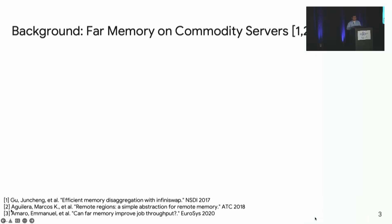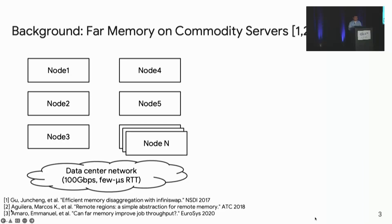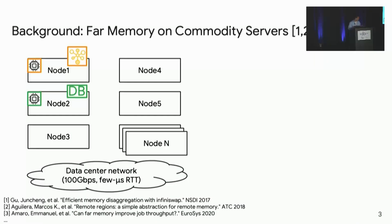From a high level, far memory can be viewed as one specific type of memory disaggregation. We have a cluster of commodity servers or nodes connected by a fast data center network with 100G bandwidth and a few microseconds latency. Different nodes may host different applications — for example, node 1 runs graph processing, node 2 runs in-memory databases, and nodes 4 and 5 run email services.